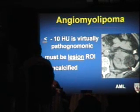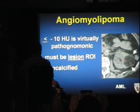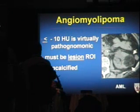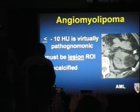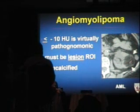AMLs: in a classic AML you can measure, using a region of interest, attenuations more negative than minus 10 Hounsfield units. Be careful to measure lesion ROI and not get contaminated by sinus fat or perinephric fat. AMLs are typically non-calcified. There have been rare case reports of calcified renal masses that measured more negative than minus 10 and actually contained fat on pathology — those were renal cell carcinomas. Calcium plus fat should raise the possibility of a renal cell.